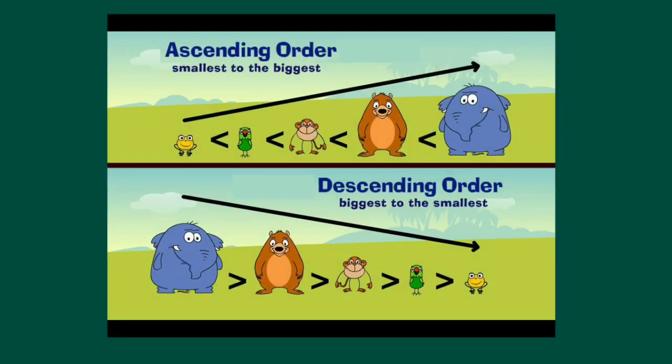Our next topic will be ascending order and descending order. Ascending order means arranging numbers from smallest to biggest, and descending order means biggest to smallest.